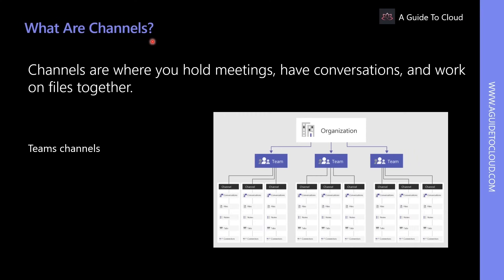Teams are made up of channels, which enable users to organize a team into dedicated subsections for keeping communications and conversations organized. Channels are where you hold meetings, have conversations, and work on files together. There are two types: standard channels, which are visible to all team members and available for anyone to participate in, and private channels, which restrict access to conversations, files, and apps to a limited subset of team members, enabling private collaboration within a project or department.